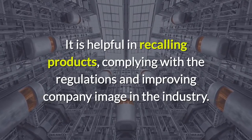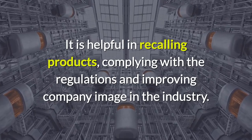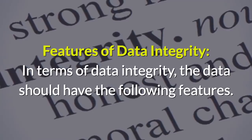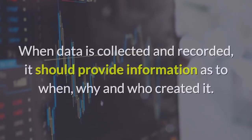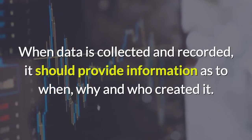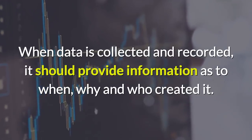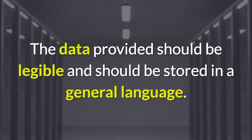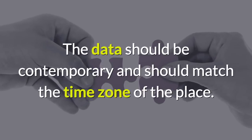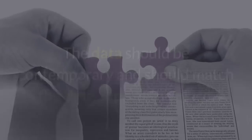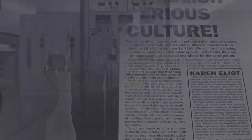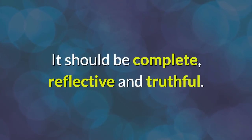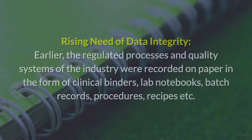To summarize, data integrity helps by providing data that is complete, accurate, and consistent. It is helpful in recalling products, complying with regulations, and improving company image in the industry. In terms of features, data integrity requires that when data is collected and recorded, it should provide information as to when, why, and who created it. The data provided should be legible and stored in a general language, should be contemporary and match the time zone of the place, should be original and plagiarism-free, free from errors either human or automated, and should be complete, reflective, and truthful.